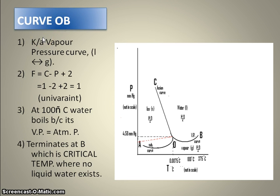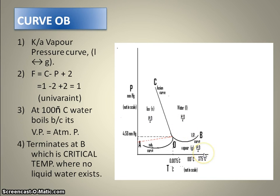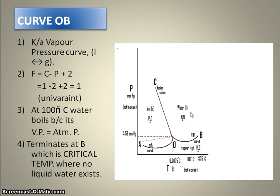Then comes curve OB, which is quite similar to curve AO. Here also there are two phases — water and vapor — which coexist in equilibrium with each other. The number of components is 1, and therefore the degree of freedom obtained is also 1. The system is also univariant, and only one of the variables — pressure or temperature — can be changed.